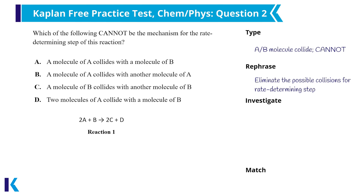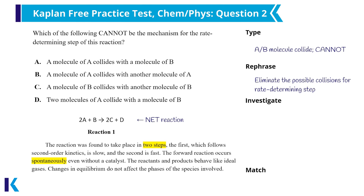First, when considering the rate of the reaction, only the reactants count since we're considering the initial rate, when the product doesn't yet exist — which is why all answer choices involve A and/or B. Second, I need to presume that all reactions provided are net reactions unless otherwise stated. Paragraph 3 tells me the reaction proceeds via two steps, so the sum of those two steps equals the reaction in the passage. The first step is slower than the second, and the slowest step is the rate-determining step — its rate determines how fast the overall reaction proceeds.